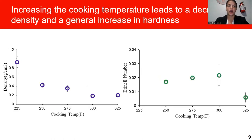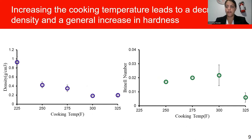The next thing we considered is changing the cooking temperature. We found that when we increase the cooking temperature, there is a decrease in density and a general increase in hardness. In the density graph, as cooking temperature is increased, the density decreases. This is because the heat affects the kinetics of the baking soda reaction — at a higher temperature, the baking soda reacts faster, causing more bubbles, which decreases the density of the candy.